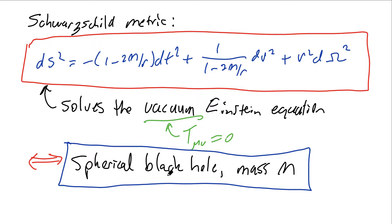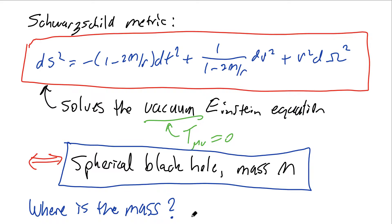One question people often have is: if this represents an object of mass m, a black hole, how can that be since we solved the vacuum Einstein equations? Vacuum means T_μν = 0, so there are no matter fields anywhere. So how can there be mass? Or said another way, where is the mass in this spacetime?